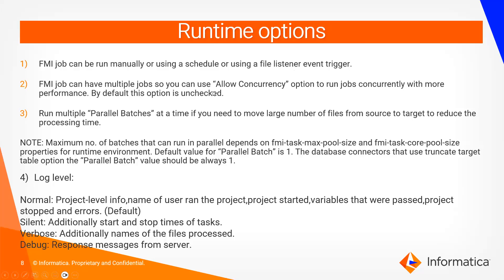An FMI task can have multiple concurrent jobs, so there is an option called Allow Concurrency — by default it is unchecked, but you can enable it to run multiple parallel jobs for better performance. The Run Multiple Parallel Batches setting is important: by default, parallel batch is 1, meaning all files are picked up in one batch. If you want to move a large number of files and reduce processing time, you can increase the parallel batch count — for example, setting it to 5 means 5 files will be processed per batch.